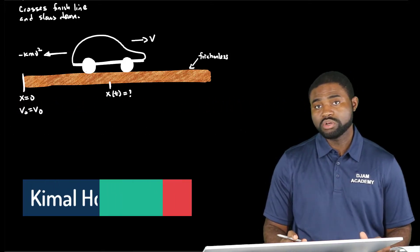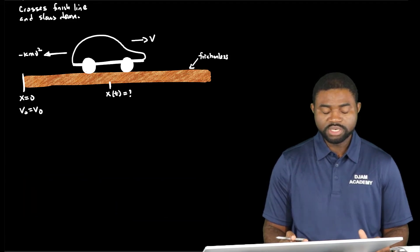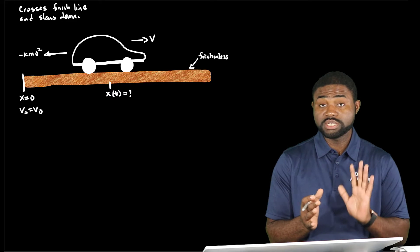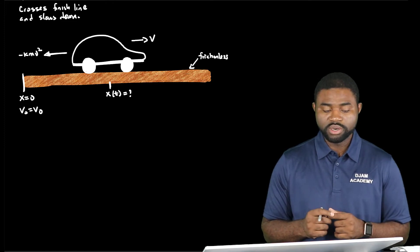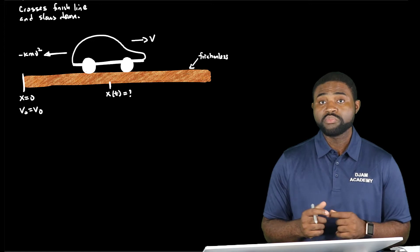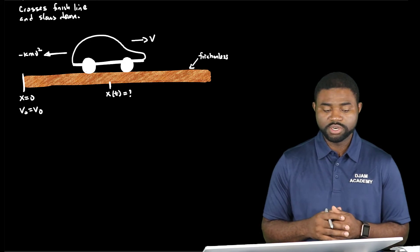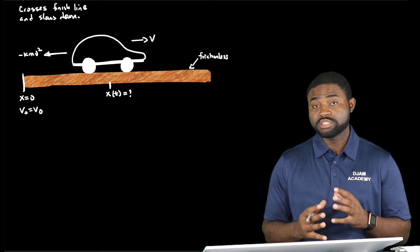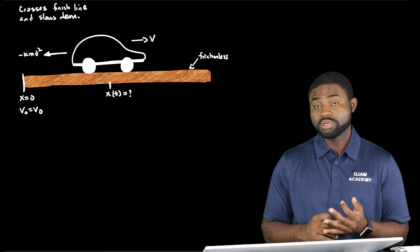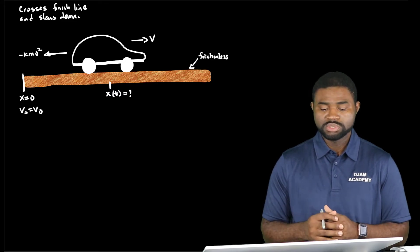Hello everybody and welcome to Jam Academy. We have an example that demonstrates how to solve problems involving resistive forces. A racing car crosses the finish line and starts decelerating. The only resistive force acting on the car is given by F = kmv², where k is a positive constant, m is the mass of the car, and v is the speed of the car. We are required to derive an expression to show how the velocity, acceleration, and position of the car vary with time as it slows down to rest.